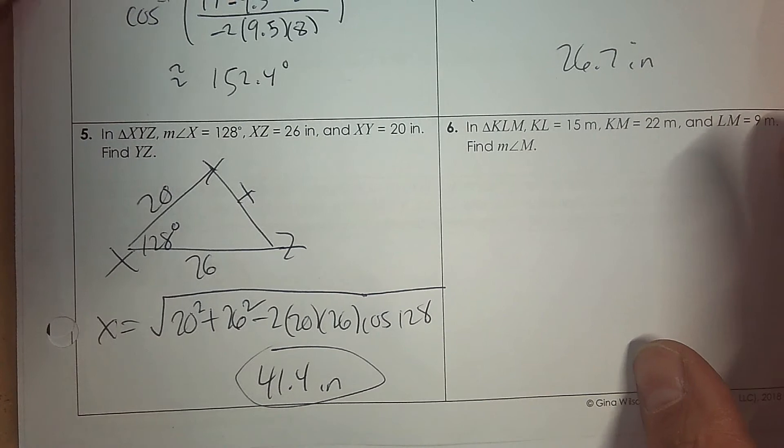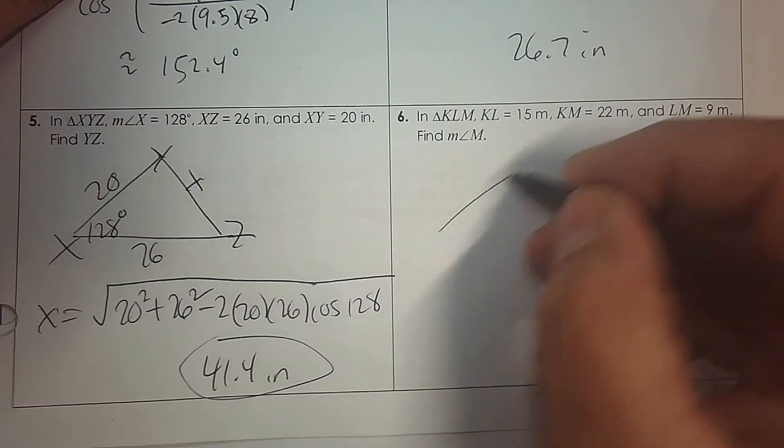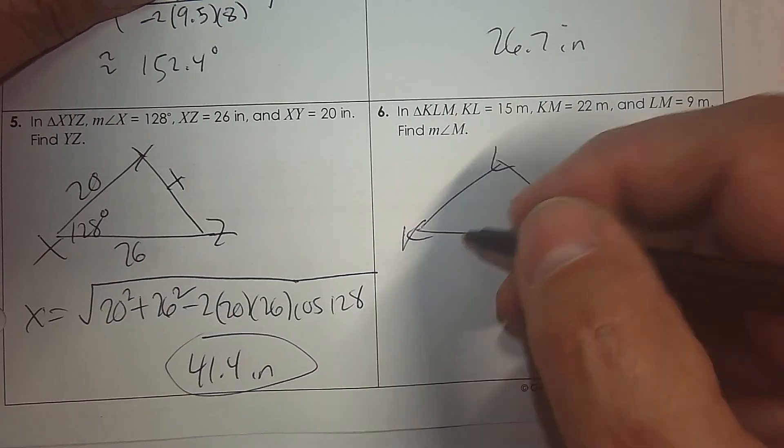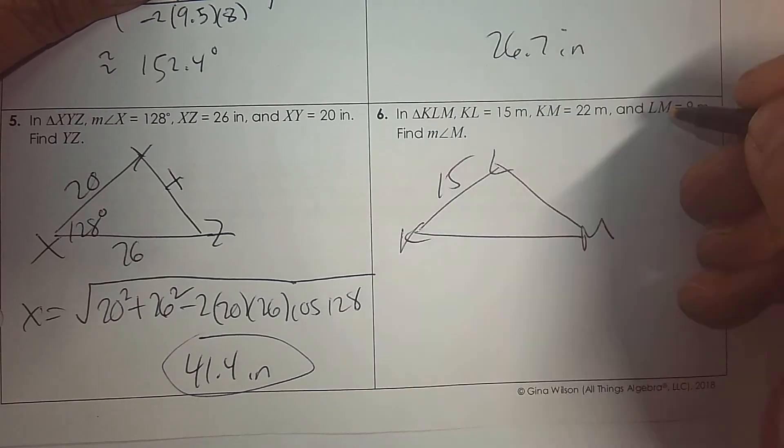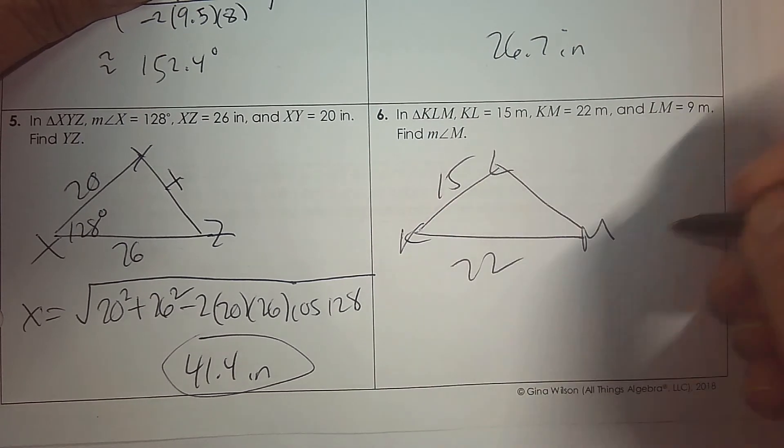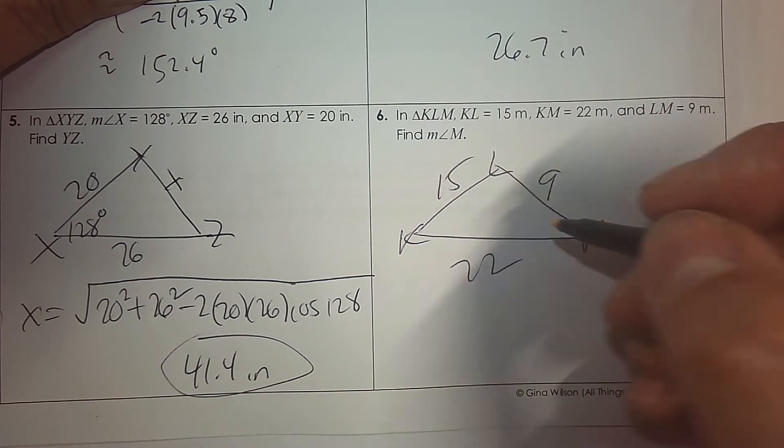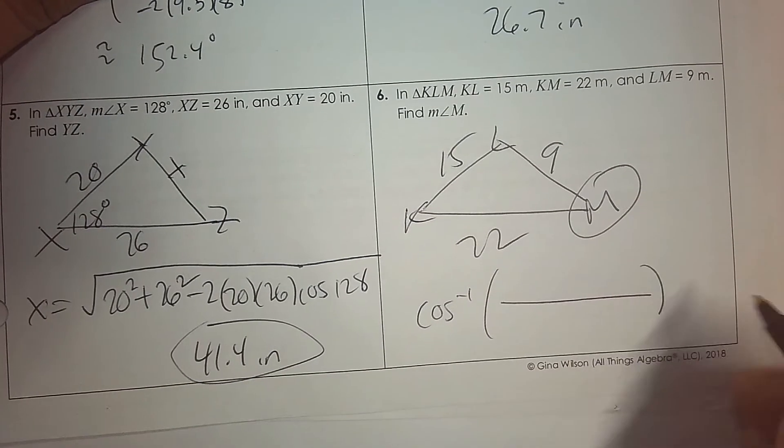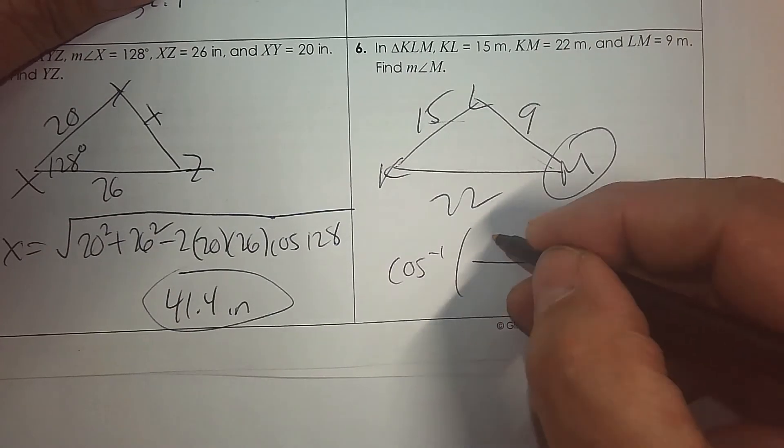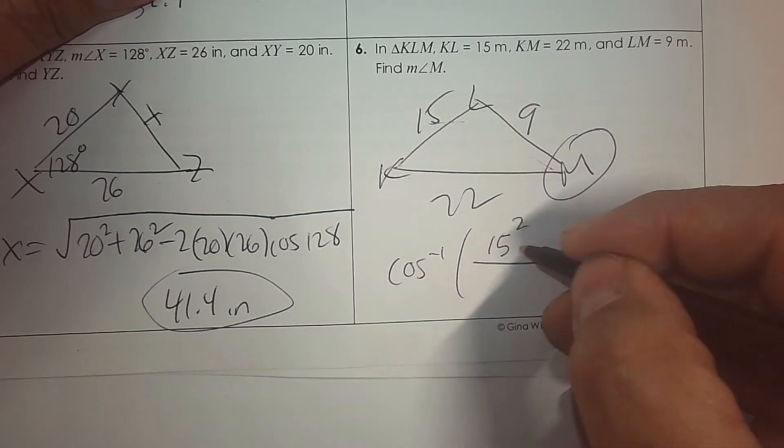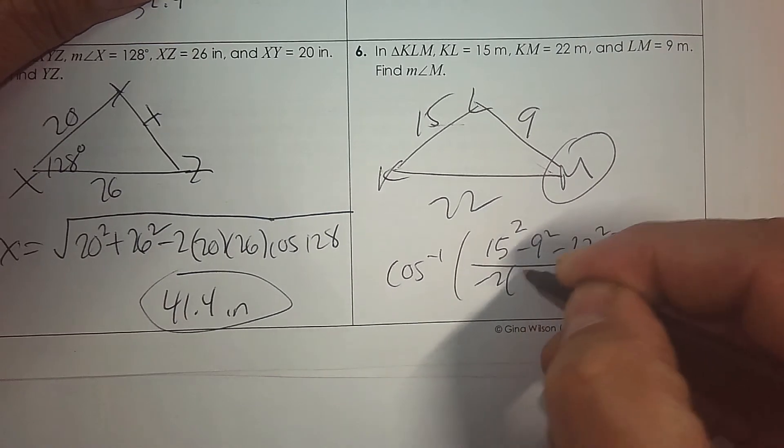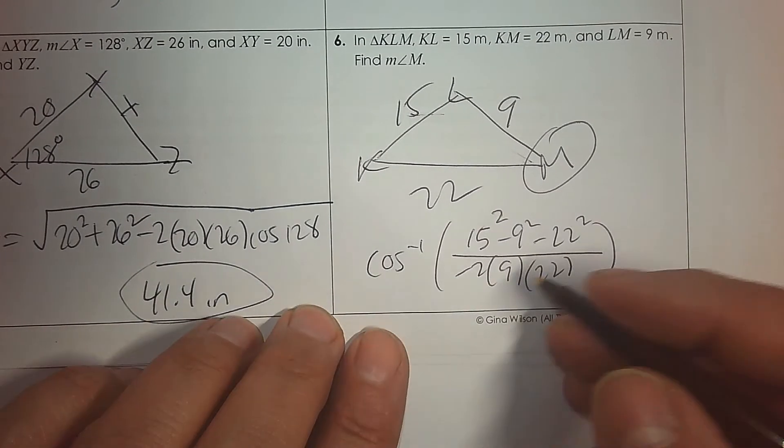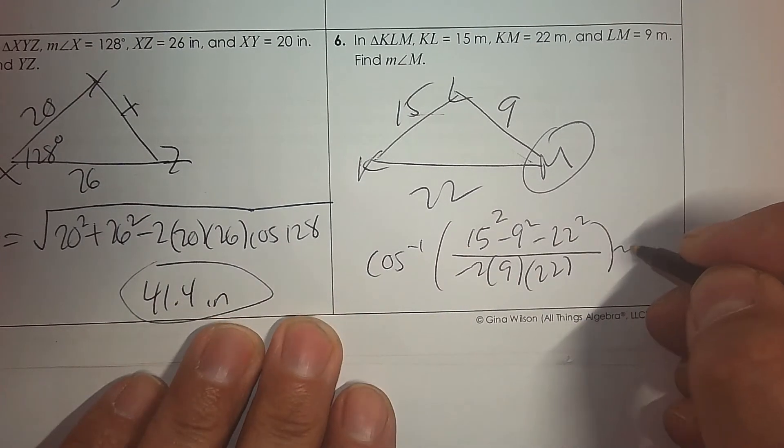Again here, KLM. So just draw a generic triangle. It says K to L is 15. K to M is 22. And L to M is 9. It says find angle M. So to find that angle, it's the inverse cosine. So start with the side opposite of M, which is 15. And then the other two sides, the order does not matter. But understand the structure of the law of cosines as you do this. And then you get your answer. And it's 30.8.